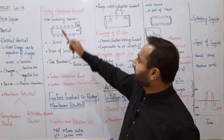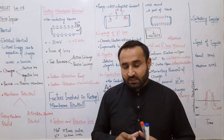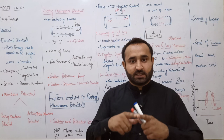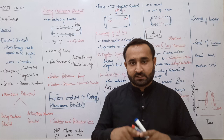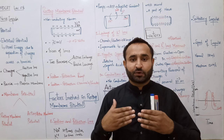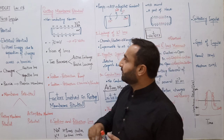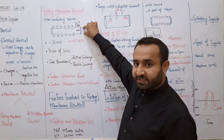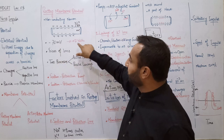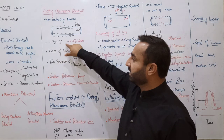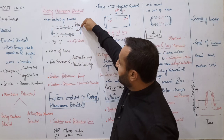Resting membrane potential کی definition: membrane potential across cell membrane of non-conducting nerve cell۔ Non-conducting nerve cell کی plasma membrane کے across جو electrical potential difference ہے اس کو resting membrane potential کہتے ہیں۔ اگر ہم potential meter سے measure کریں تو یہ minus 70 millivolt یا minus 0.07 volts آتا ہے کیونکہ milli کا مطلب ہوتا ہے ہزار واسطہ۔